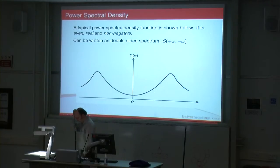A typical curve of PSD looks like this, in terms of omega, radians per second. You've got SX omega there. You can see that it's even, so it can be reflected about the y-axis. You can see that it's real because it shows up on a real set of axes, and it's also non-negative. It doesn't drop below this line, so it's always positive. This is known as a double-sided spectrum, S plus omega to minus omega.